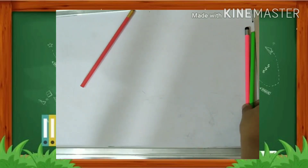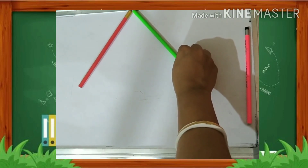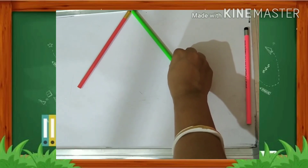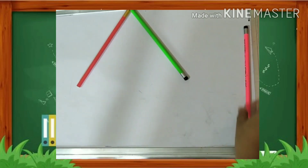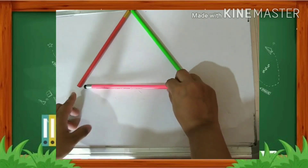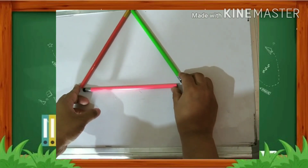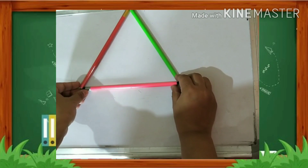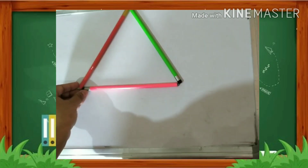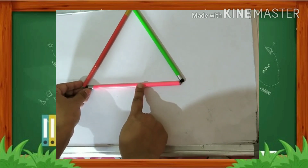Now let's make a triangle by using three pencils. Keep the pencils on a floor or a table like this, just join the two ends of a pencil. See, the triangle is ready!